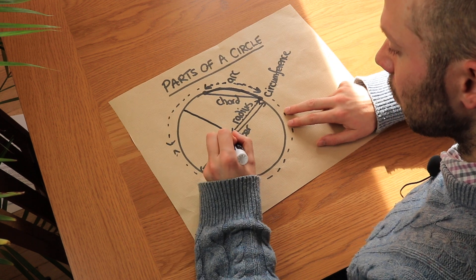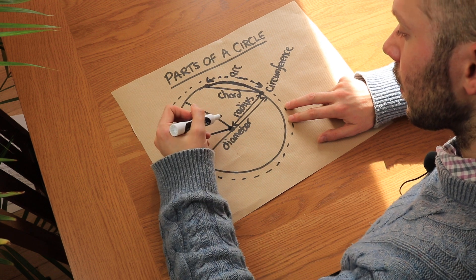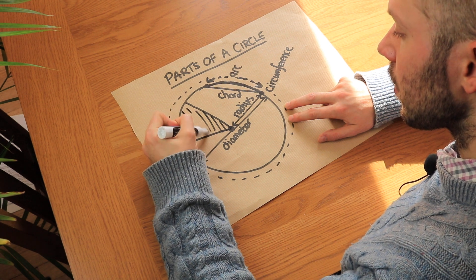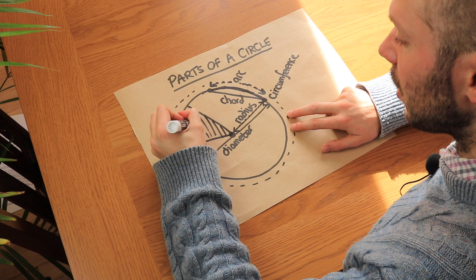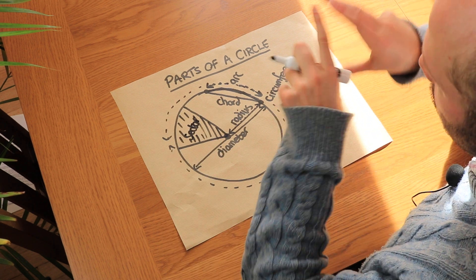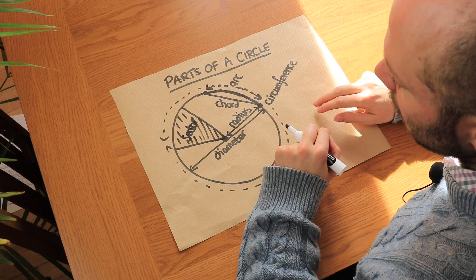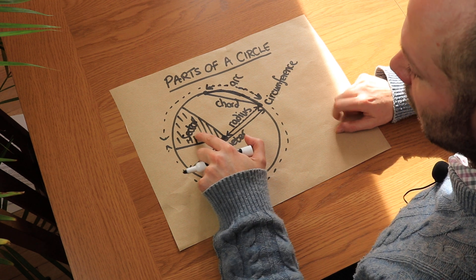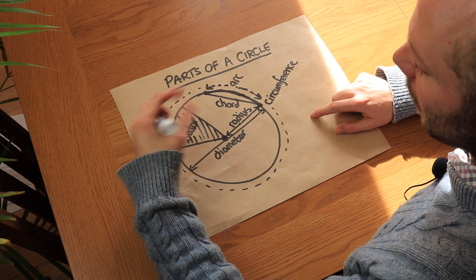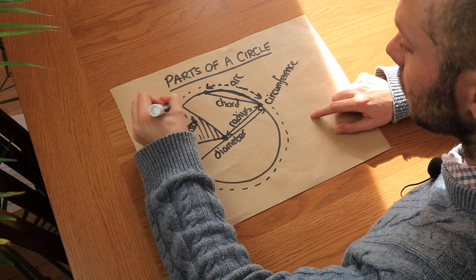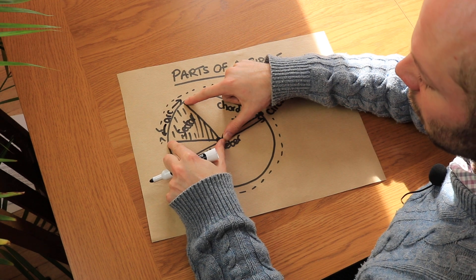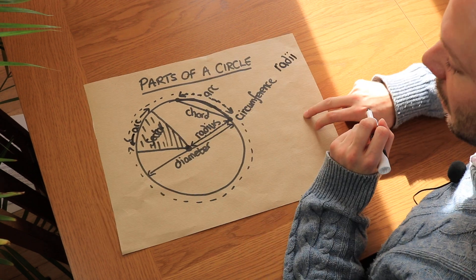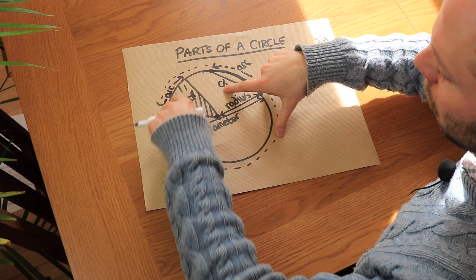We can also create a region of the circle, and this region is known as a sector. You can think of a sector as just like a slice of a pie chart or a slice of a pizza. It is the region between an arc of the circle and two radii. The plural of radius is radii. So we have two radii, an arc, and the region in the middle is a sector.